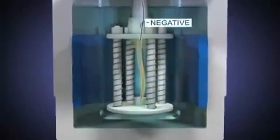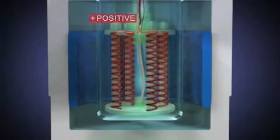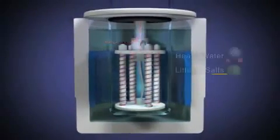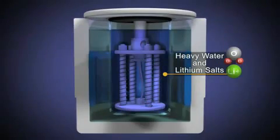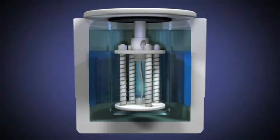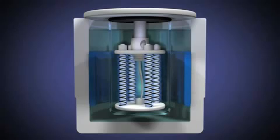A voltage is applied to two electrodes immersed in an electrolytic solution of heavy water and lithium salts. This establishes a flow of current from a strip of palladium acting as the cathode to several platinum coils acting as the anode.